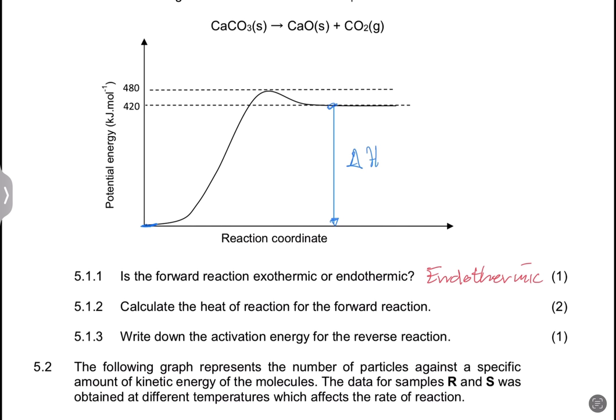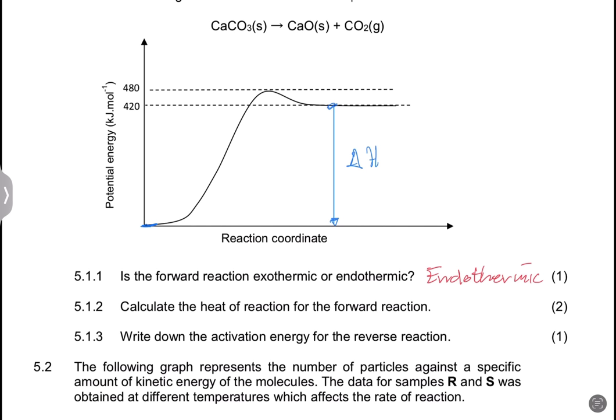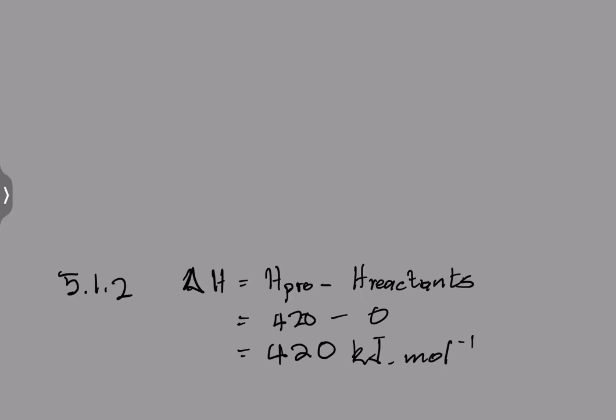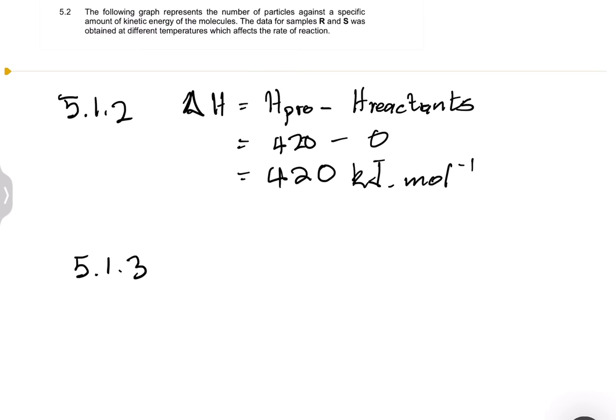The next part says: write down the activation energy for the reverse reaction. We said that for the reverse reaction, all you do is take the peak minus the energy of the products. That's 480 minus 420, which gives us 60. So the activation energy is 60 kilojoules per mole.